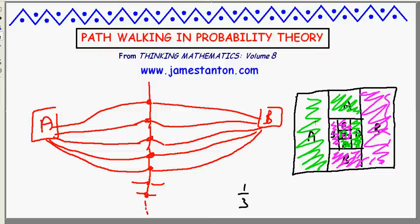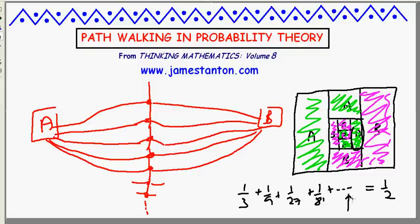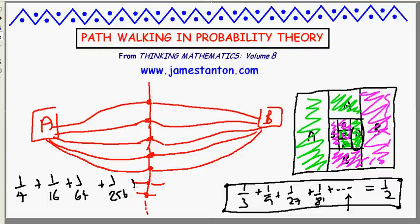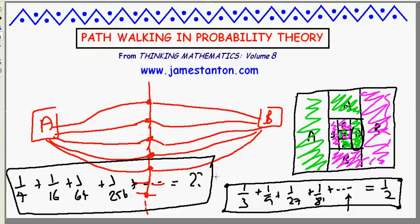So this is a pictorial proof that one third plus a third of a third plus a third of a third of a third, and so on forever, equals exactly half the area. There's a nice calculus-type result: an infinite process that must have a finite answer, being half the square. So I'm wondering if you can come up with a path walking puzzle that deals with the sum one fourth plus one fourth squared plus one fourth cubed plus one fourth to the fourth and so on - what does that equal, and what picture proves it? Thanks very much.